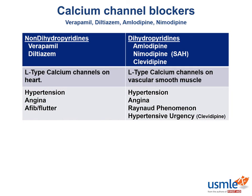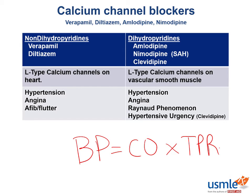You can give dihydropyridines or a non-dihydropyridine for hypertension because they will both drop blood pressure, but in different ways. Remember the equation: blood pressure equals cardiac output times total peripheral resistance. Dihydropyridines tend to drop blood pressure by arterial vasodilation, leading to a drop in total peripheral resistance. Non-dihydropyridines cause a decrease in cardiac output by decreasing heart rate and contractility.